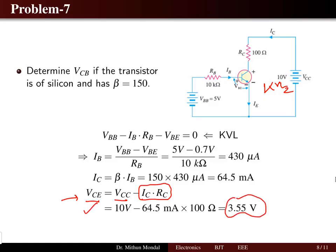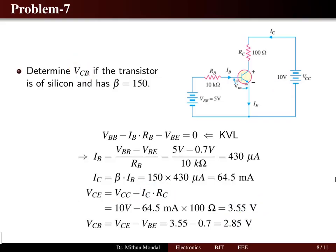We need to determine the collector-to-base voltage. The collector-to-base voltage equals the collector-to-emitter voltage minus the base-to-emitter voltage. Collector-to-emitter voltage is 3.55 volts and base-to-emitter voltage is 0.7 volts (the barrier potential), giving a final answer of 2.85 volts for the collector-to-base voltage.